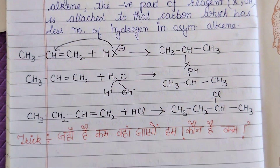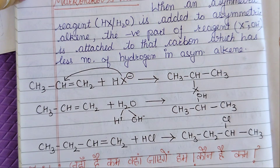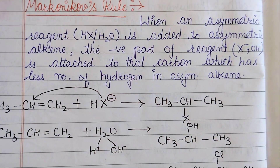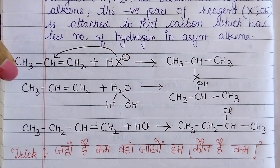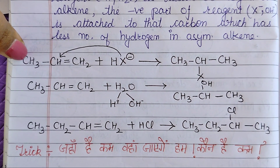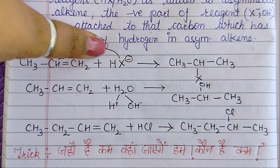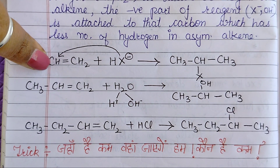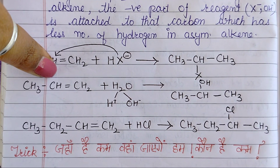This is all about Markovnikov's rule, which is quite simple. The trick is: wherever hydrogen is less, the negative part will go. Through this trick, you can explain the theory and the reactions easily. For an asymmetric alkyne with an asymmetric reagent, the negative part of the reagent will attack the carbon with fewer hydrogens.